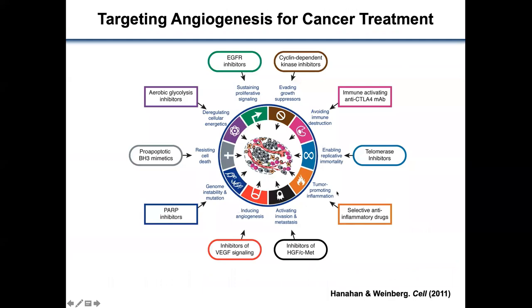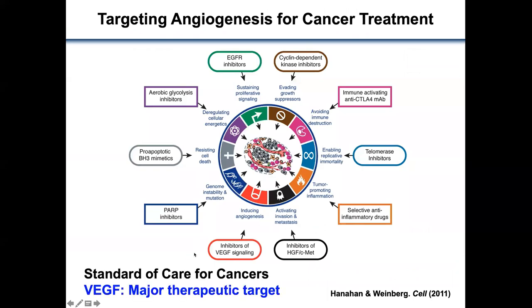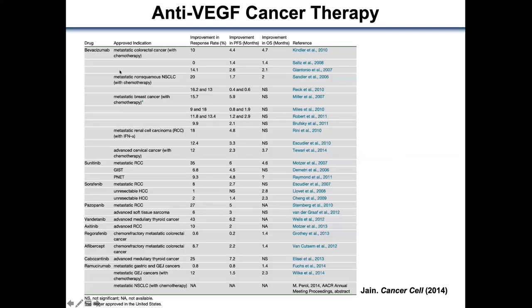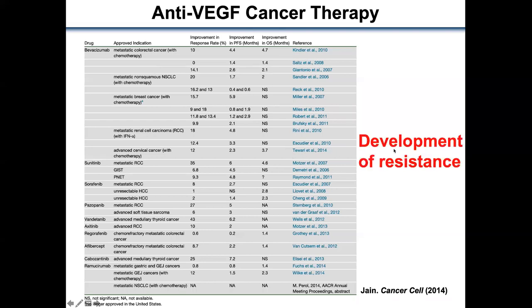Given that anti-angiogenic therapy is a standard of care for multiple types of cancers, today I'll share some results targeting angiogenesis. Angiogenesis — new blood vessel formation by sprouting of pre-existing vessels — is one of the hallmarks of cancers. Among many angiogenic factors, the VEGF signaling pathway is a key component of pathological angiogenesis in most cancers. So far, 10 different anti-VEGF drugs have been approved by the FDA to treat various solid tumors in the clinic, starting with metastatic colorectal cancer in 2004.